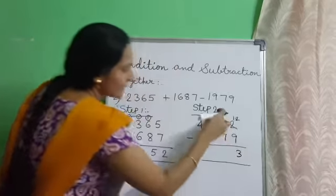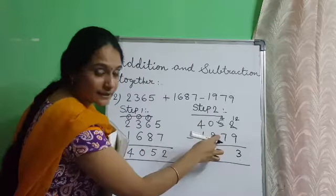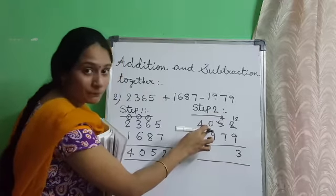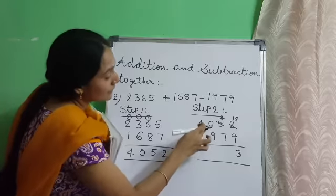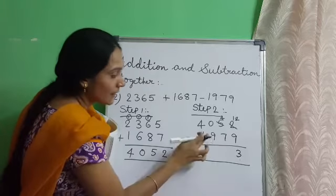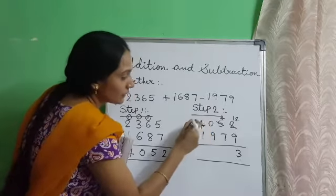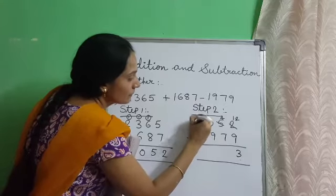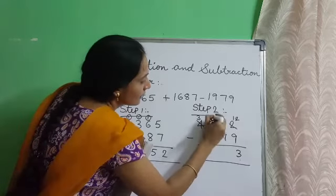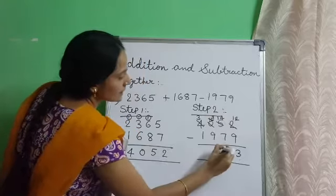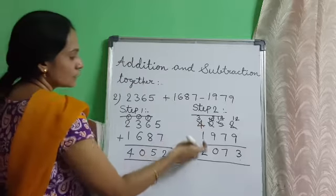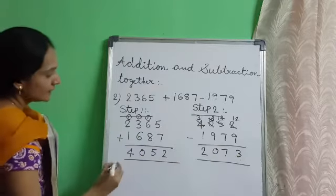Subtract the tens: 4 is smaller than 7, so we cannot subtract 7 tens from 4 tens. In the hundreds place, 0 is smaller than 9, so we borrow 1 from the thousands place. 4 minus 1 is 3, this 0 becomes 10, and this 4 becomes 14. 14 minus 7 is 7, 9 minus 9 is 0, 3 minus 1 is 2. By subtracting, we get the answer 2073.